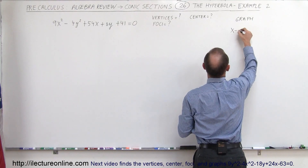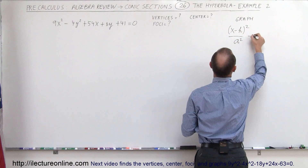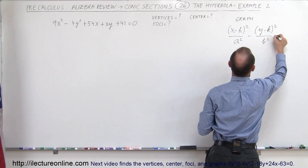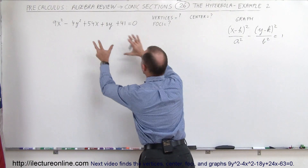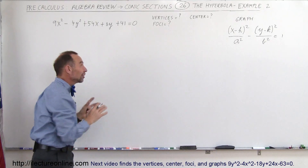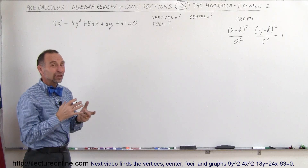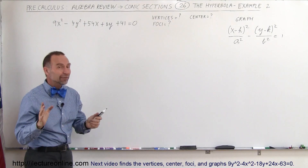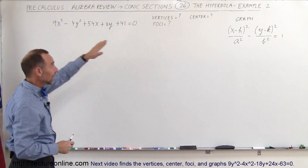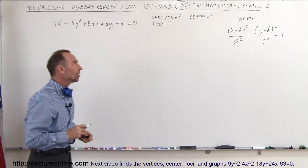The general form would be: (x minus h) squared divided by a squared, minus (y minus k) squared divided by b squared, equals 1. So what we're trying to do is make the given equation look like that. The coefficients are carefully chosen to make it manageable, though it's still quite challenging. We need to find the vertices, the foci, and the center.